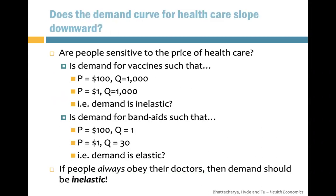Let's solve the first question: does the demand for healthcare slope downward? Consider demand for vaccines. Suppose one vaccine costs $100 and people get 1,000 units of vaccines. This is inelastic because even if the price changed dramatically, the demand has not really changed.